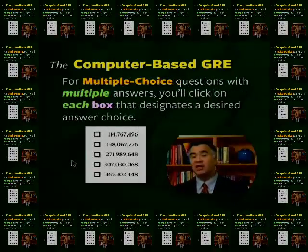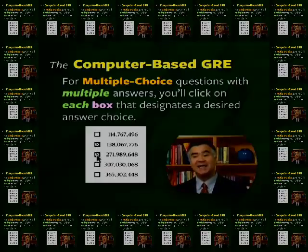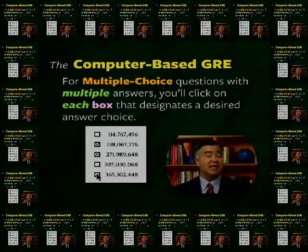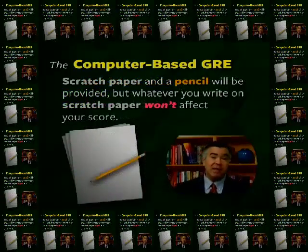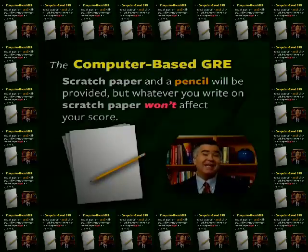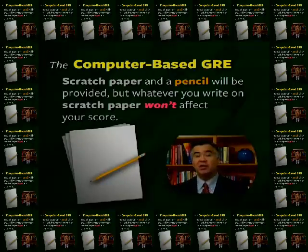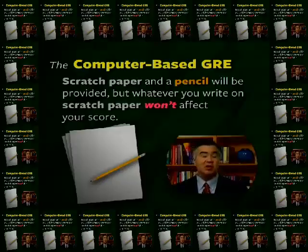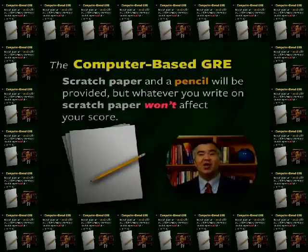For multiple choice questions with multiple answers, you'll use the computer mouse to click on each box that designates the desired answer choice, and click on any selected box again to deselect it. Scratch paper and a pencil will be provided for making notes and calculations — for drawing a diagram for a geometry question, for example. But whatever you write on the scratch paper will not affect your score. You'll only get credit for the answers that you select and enter on the computer.